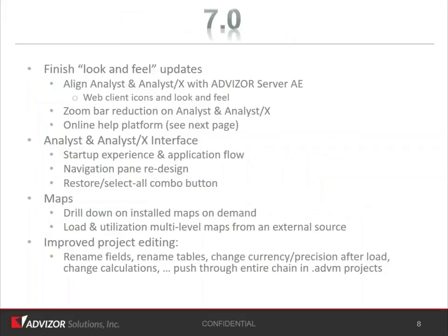7.0 — where are we headed? This 7.0 is the culmination of the work we've done in the 6.4, 6.6, 6.7, and 6.8 releases. First is to finish the look and feel updates. You'll notice that our HTML5 browser interface has different icons and different look and feel than the authoring tool, the Analyst and Analyst X. In 7.0, they will be aligned with the same look and feel. In the HTML5 web client, we've also done a bunch of work to hide toolbars and zoom bars that aren't needed, but they'll pop up when you want them. That same approach will be brought to the Analyst and Analyst X.